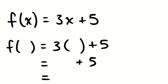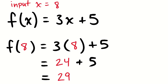Let's look at another input. Here is the same function, but this time we're going to give it the value 8. The 8 lands in every place where there was an x. So 3 times 8 is 24, and 24 plus 5 is 29. So f of 8 is 29.